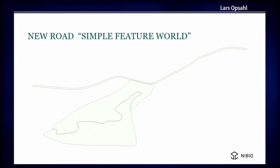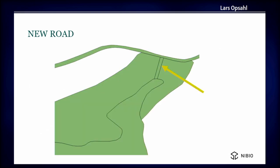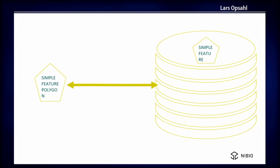We have a very simple case. This is a polygon. What we want to do is draw a road here and end up with this result. This is super simple. We have this context: a database with simple feature, and an API where you can load simple feature.